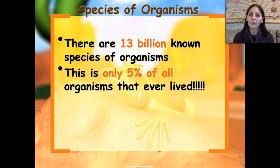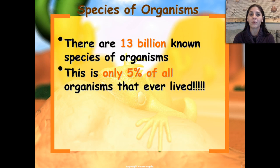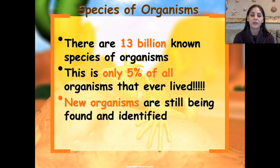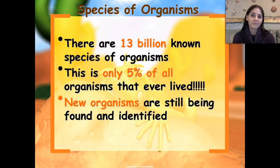There are 13 billion known species of organisms on this Earth right now, and that's only 5% of the amount of organisms that have ever lived on Earth. There are still new organisms being found every day and being named by scientists or regular people like you and me.